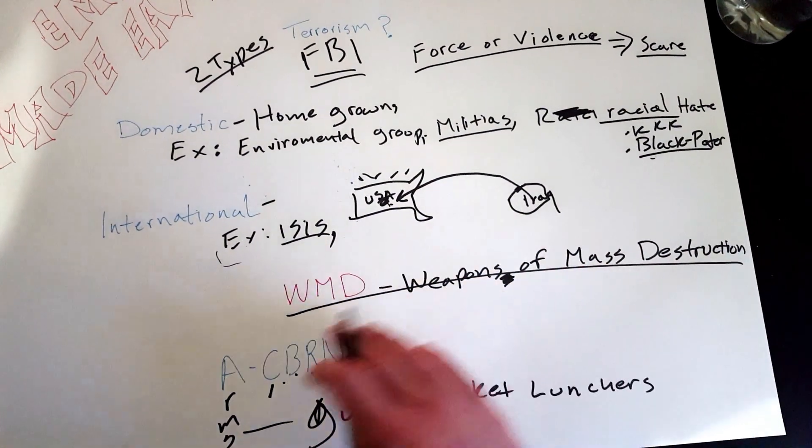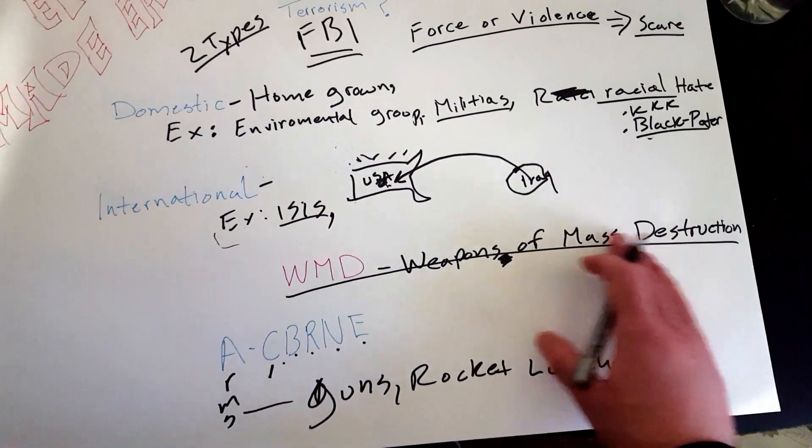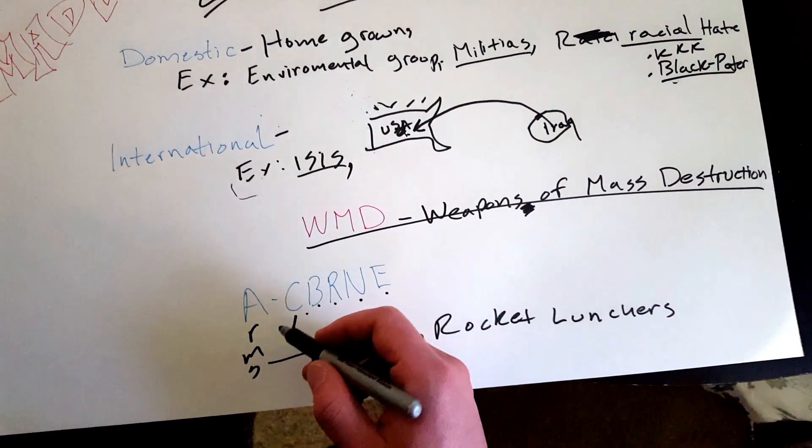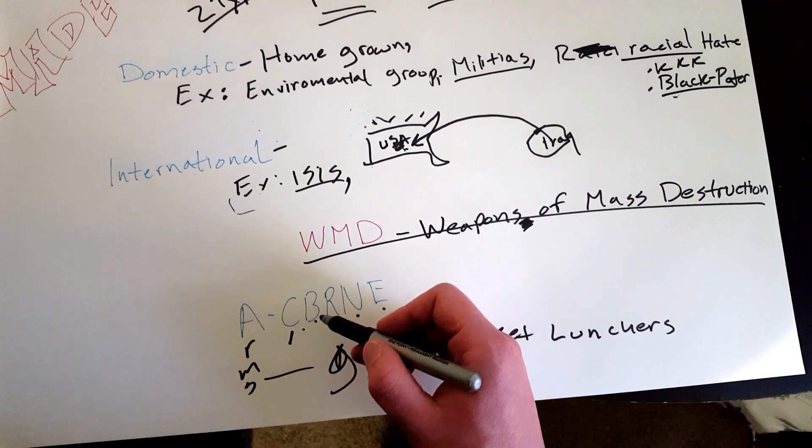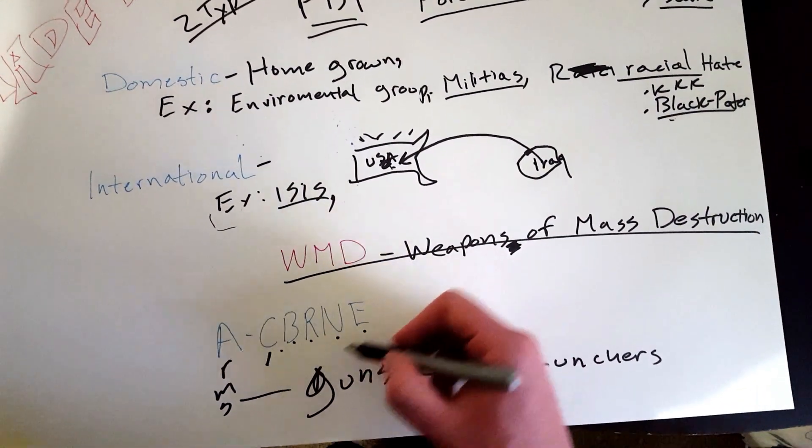They will use weapons of mass destruction. WMD stands for weapons of mass destruction. The different kinds of weapons of mass destruction they can use fall under A-CBRNE, which are arms, chemicals, biological, radiological, nuclear, and explosives.